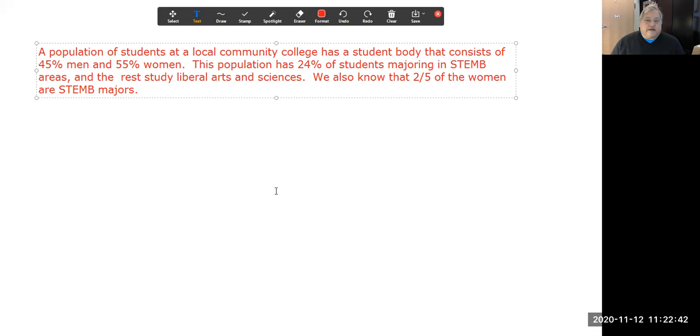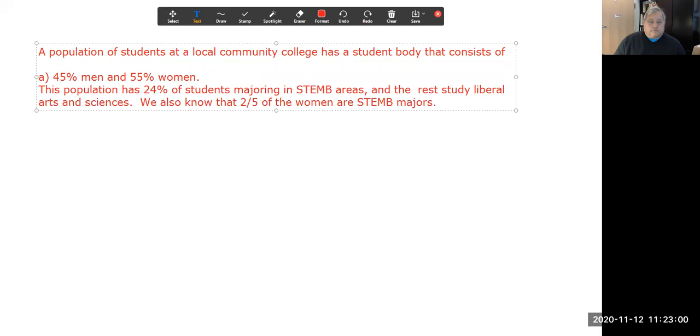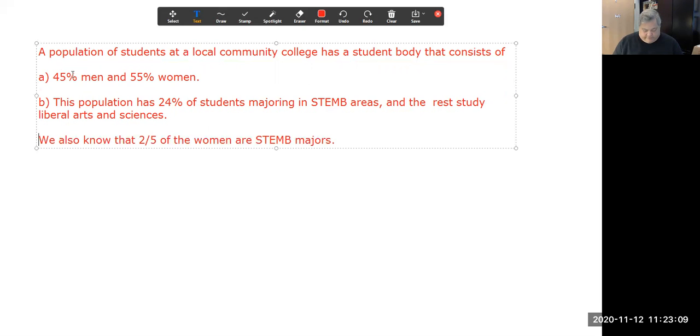So in this case, we really have two things going on: people being described as men or women, and people being described as STEMB or not STEMB. And finally, we have a third idea about the event, which is the population of students at a local community college, and this population can be thought of in both ways jointly.